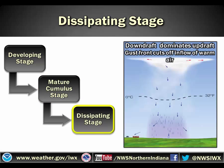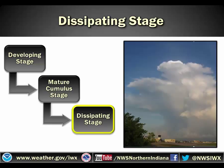The last stage is the dissipating stage. During this stage, the downdraft dominates the updraft and actually cuts it off, so there's no more warm moist air feeding the updraft. Here you can see there are no arrows pointing upwards — everything has been cut off and now it's all cold air sinking within the storm. This is what that might look like: you can see the wispy edges along the clouds because it no longer has those strong updrafts feeding it, and the storm will quickly dissipate shortly after this point.